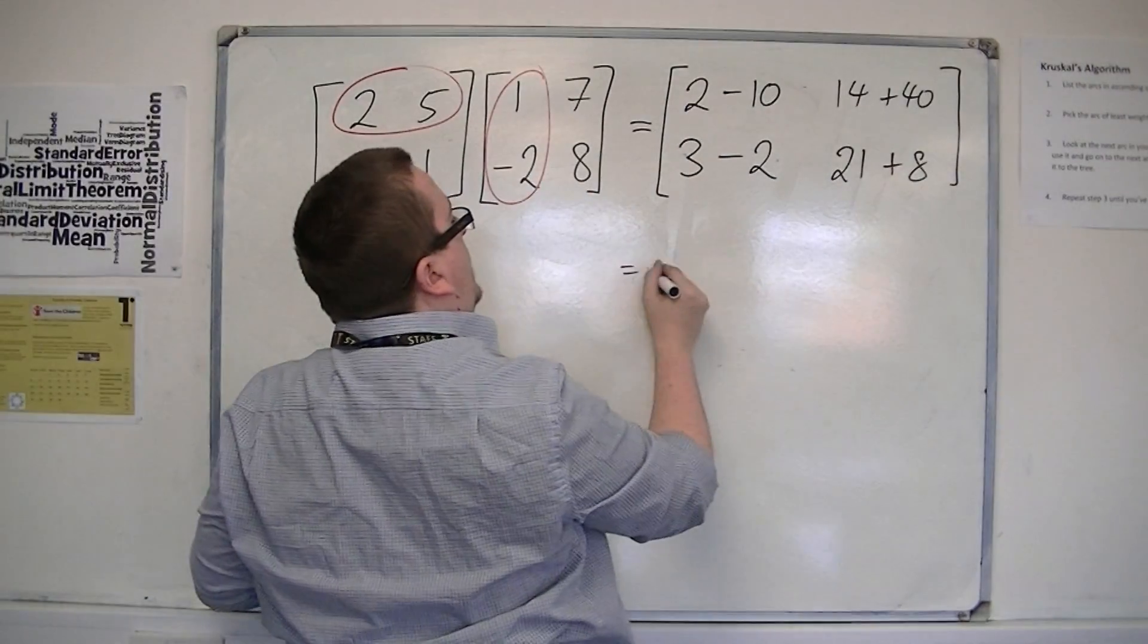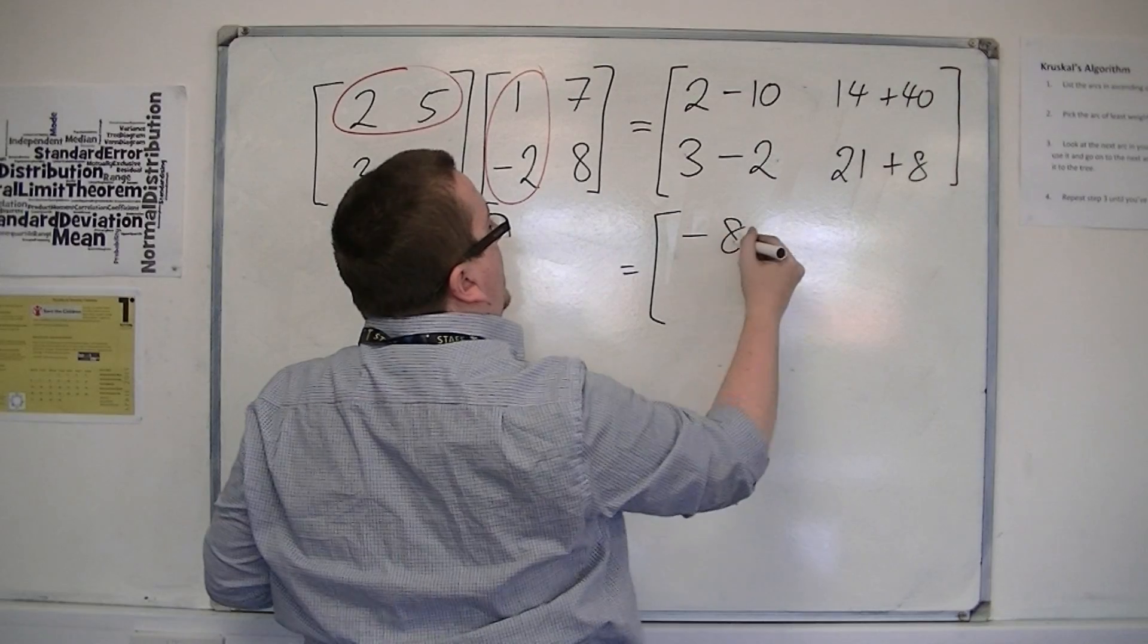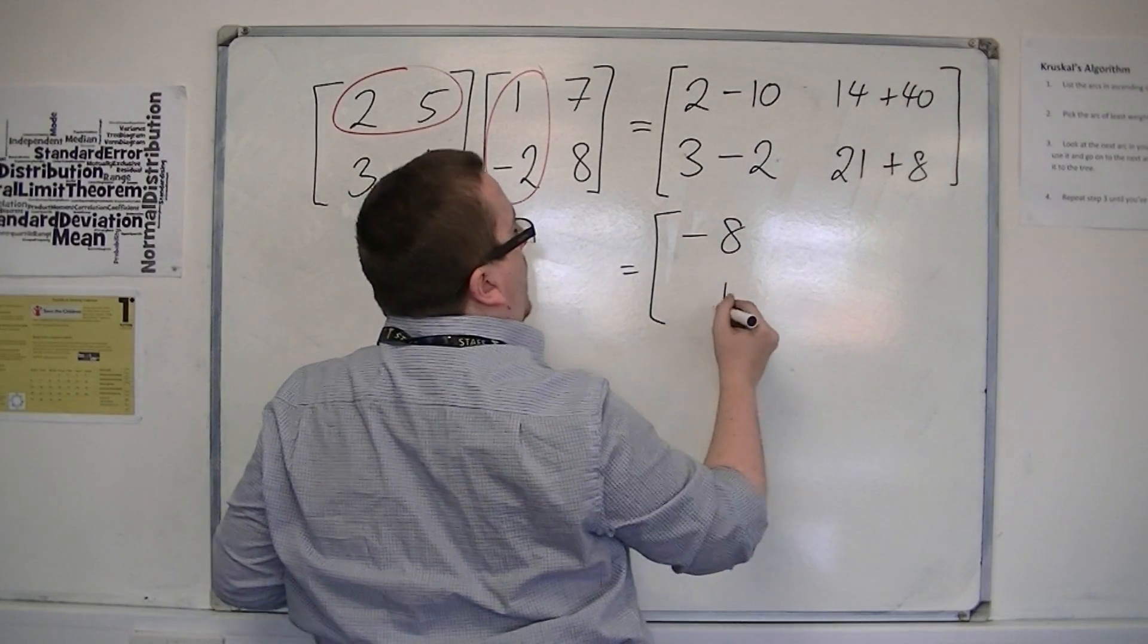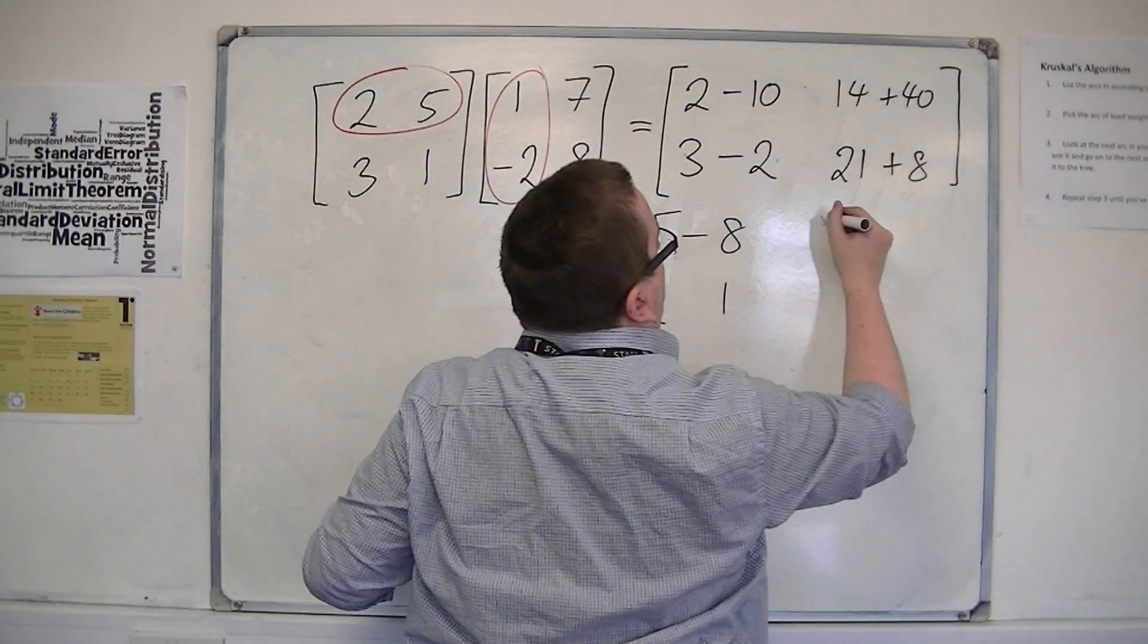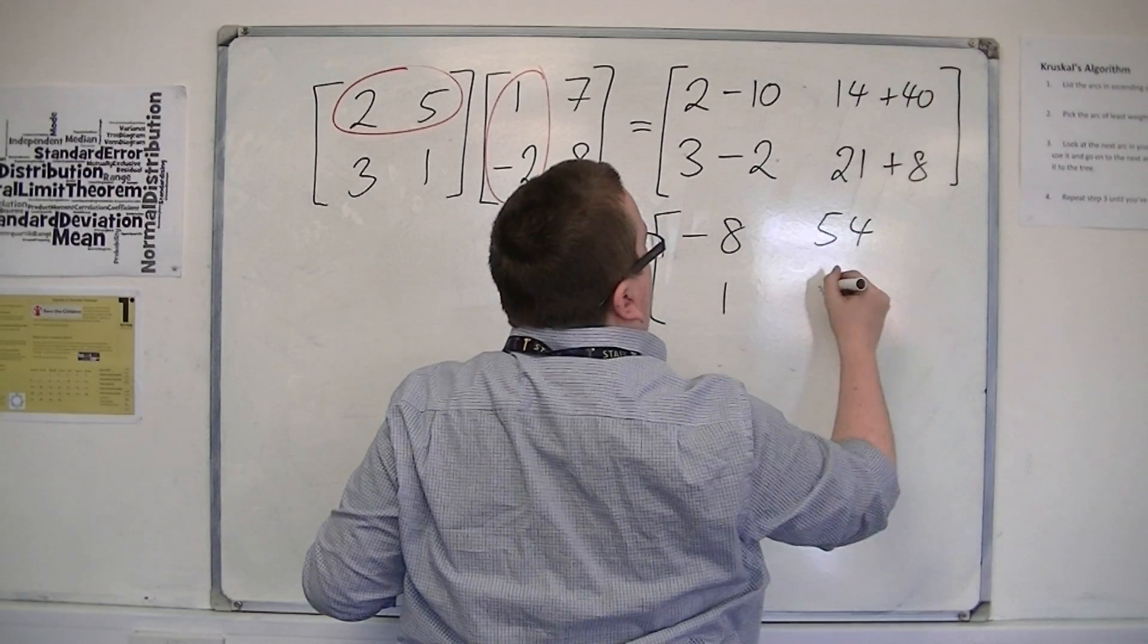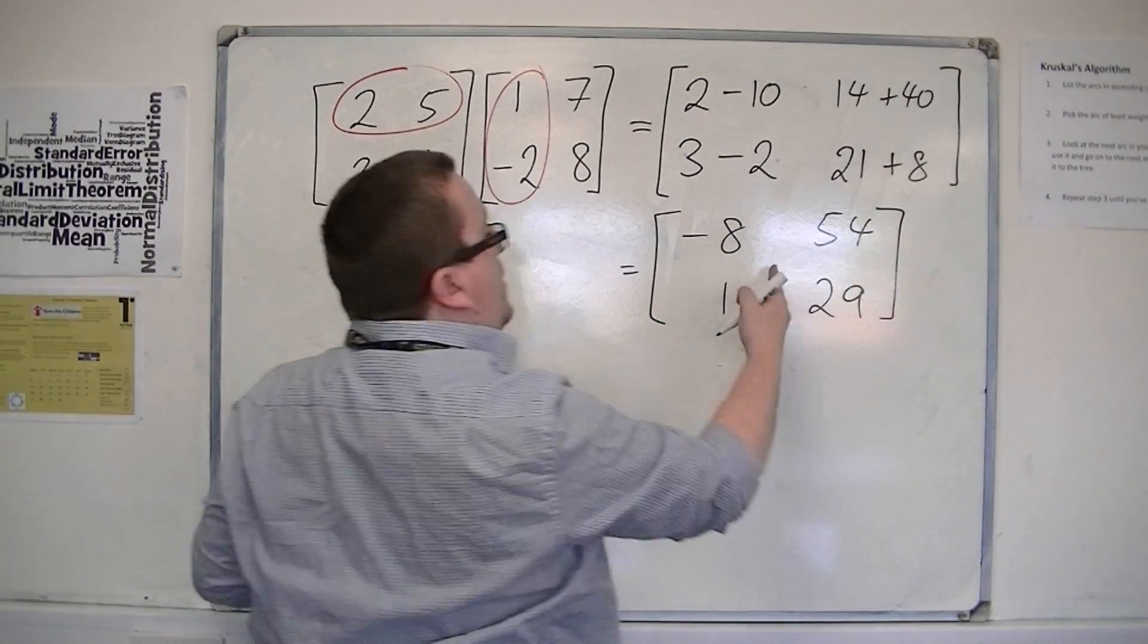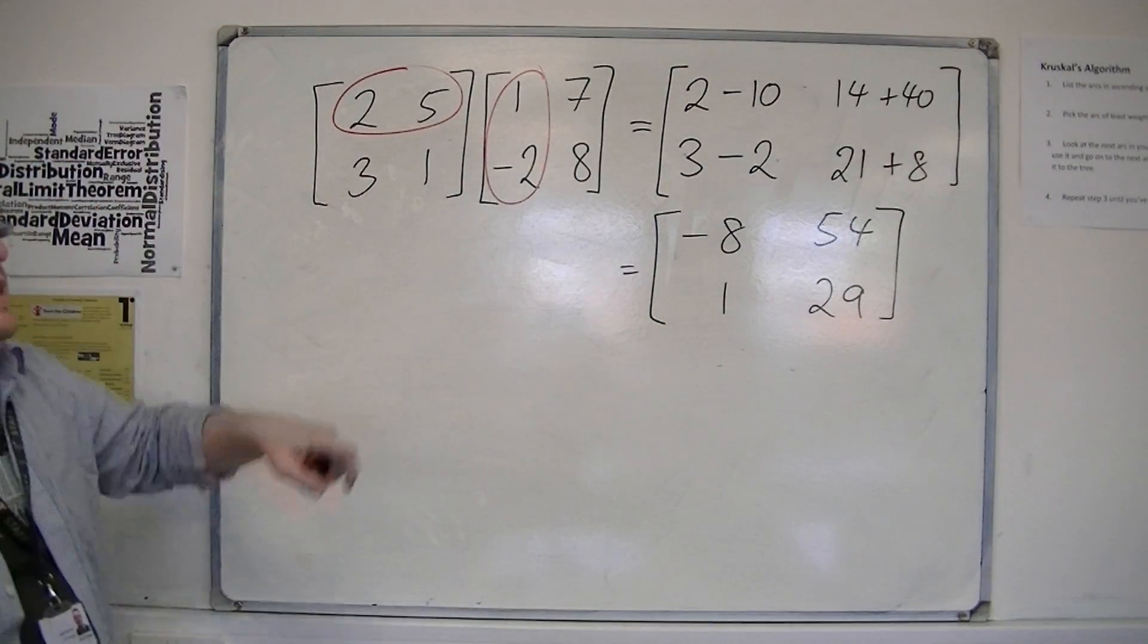And then we can simplify this. 2 take away 10 is minus 8, 3 take away 2 is 1, 14 plus 40 is 54, 21 plus 8 is 29. And so this is the product of these two matrices.